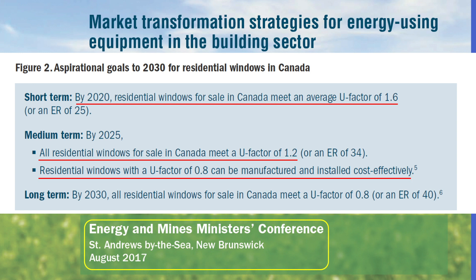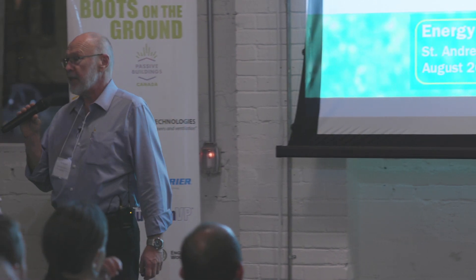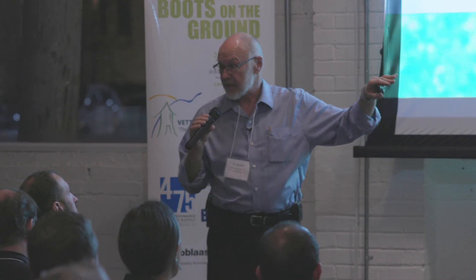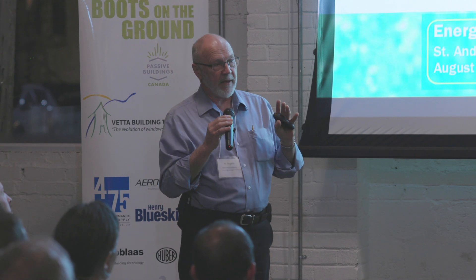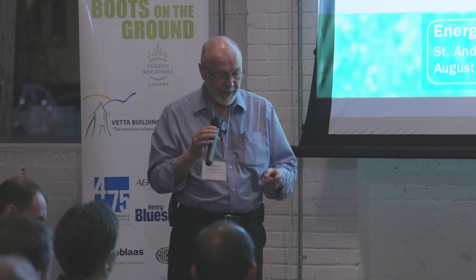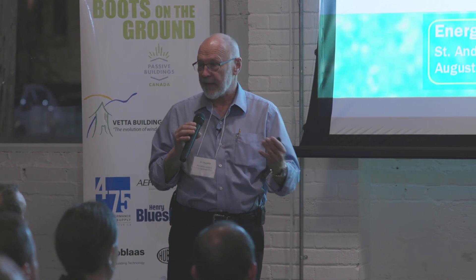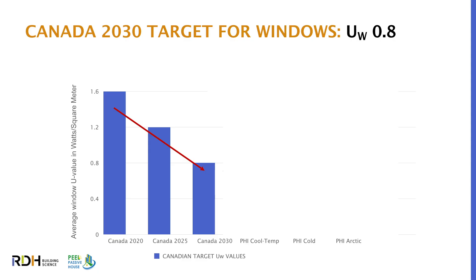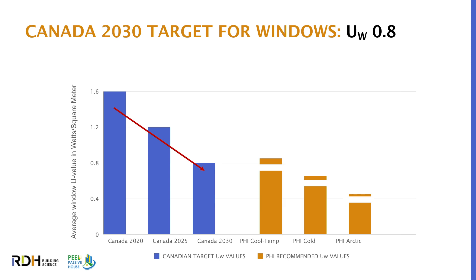Residential windows with a U-factor of 0.8 should be manufacturable and installable cost-effectively by 2025, and by 2030 all residential windows for sale in Canada must meet a U-factor of 0.8. These are pretty aggressive targets, and the deadlines might slip or the U-values relax a little. It is very challenging to reach 0.8 under the NFRC system because of the boundary conditions, but the government is serious about incentivizing the industry to go in that direction. Their intent is clearly to push windows in Canada into temperate-climate passive house territory.